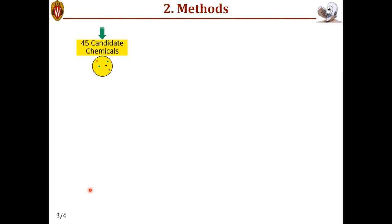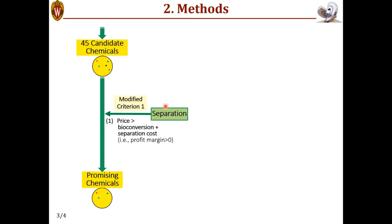Next, all we need to do is include the downstream separation cost. Once we have that, we can modify criterion one a little bit. And now we say the price has to be greater than the bioconversion plus separation cost. Essentially, we're enforcing a positive profit margin here because it doesn't make sense to adopt a bioprocess if it's not profitable.